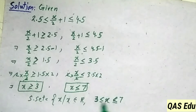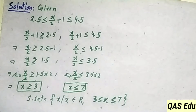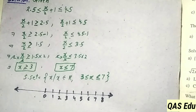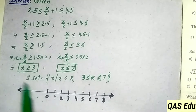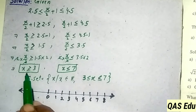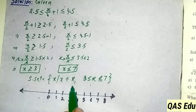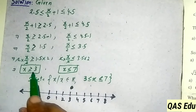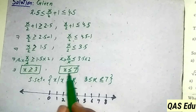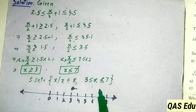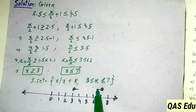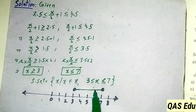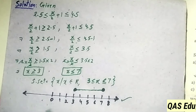So this is the inequality solution set. On the number line, x is equal to 3 is a filled circle since x is greater than or equal to 3. x is equal to 7 is also a filled circle. The number line between 3 and 7 represents the solution set.